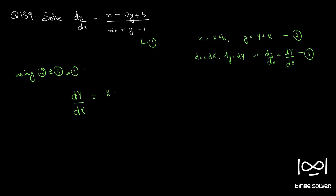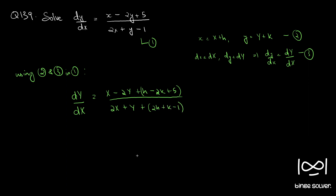...equal to (X minus 2Y plus h minus 2k plus 5) by (2X plus Y plus 2h plus k minus 1). Let's call this equation 8. If we find values for h and k such that h minus 2k plus 5 equals 0 and 2h plus k minus 1 equals 0, then equation 8 reduces to a homogeneous equation.